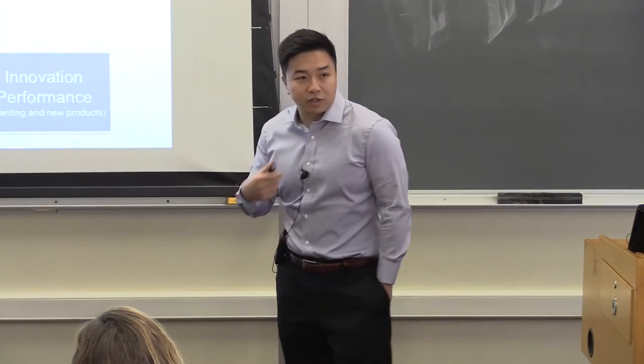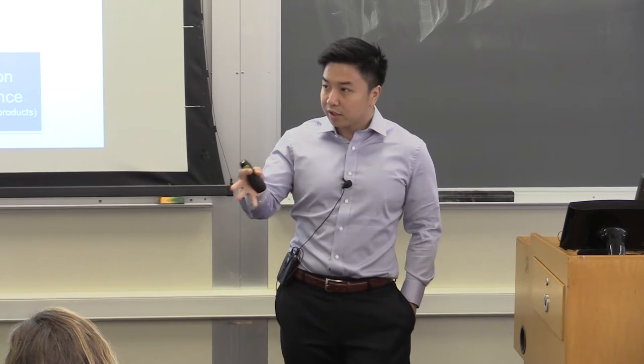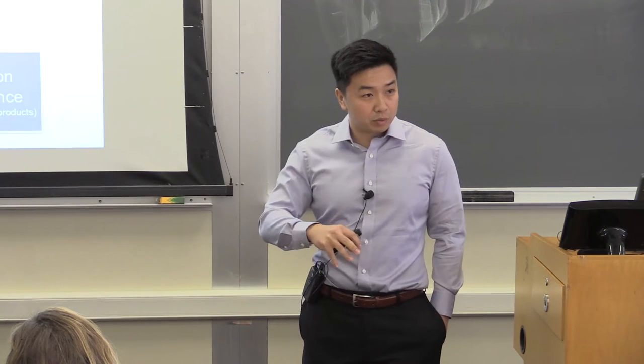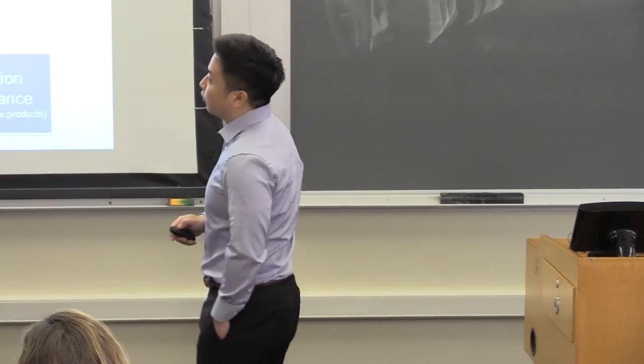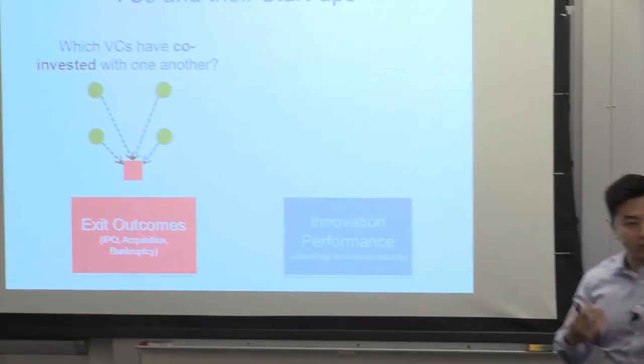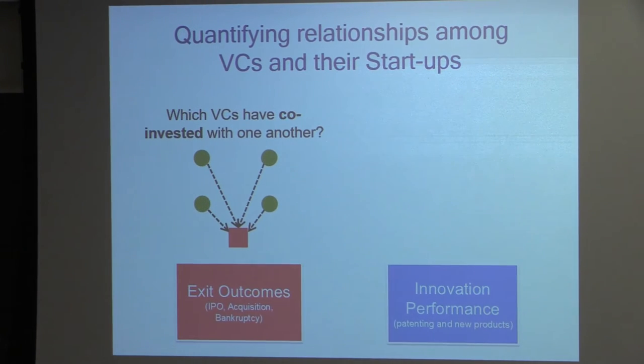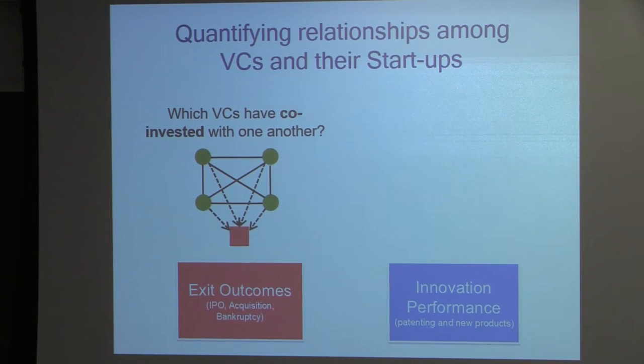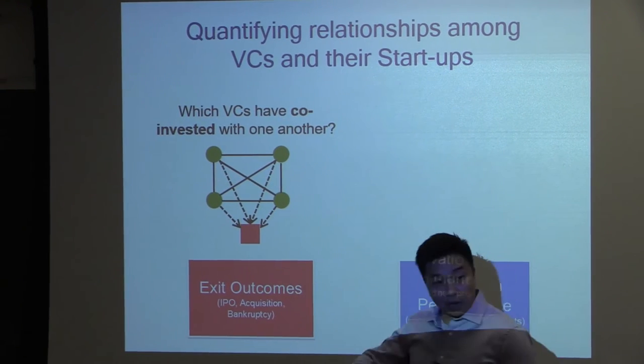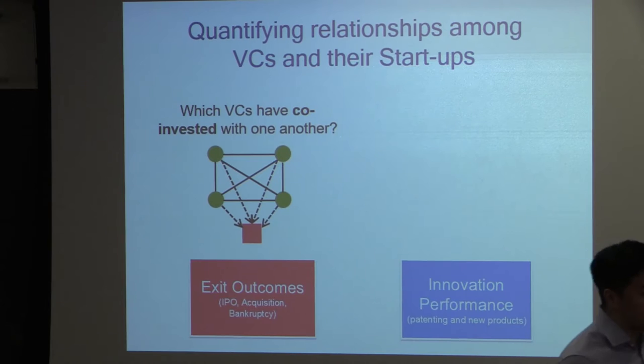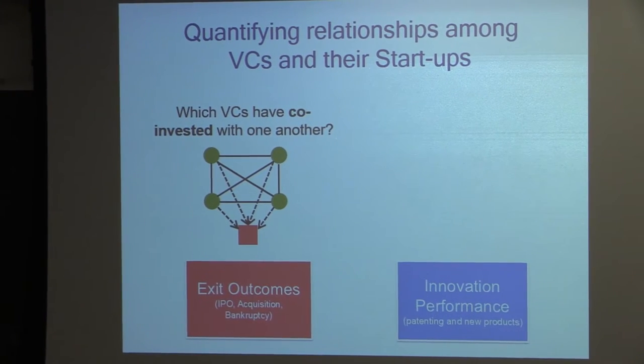One kind of question you can ask is: which VCs that collectively fund a startup have co-invested with one another before? Let's say you have four VCs and they're all funding the same startup in the first round. What we're trying to figure out with this study is if they've all co-invested with one another before, does that have anything to do with the probability of this startup going IPO, being acquired, or going bankrupt? Long story short, we find that there is an impact on this type of activity.